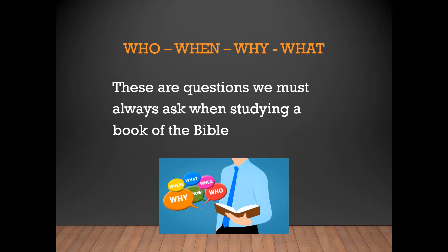The dating is relevant to our interpretation of the book of Revelation and what John wanted Christians to see. When we date something, we need to put ourselves back into the position in which the Christians were when this was written. Why was the book written? Why did the Holy Spirit reveal to John the things contained in this book? And finally — which may take multiple lessons — what is in the book for us today?